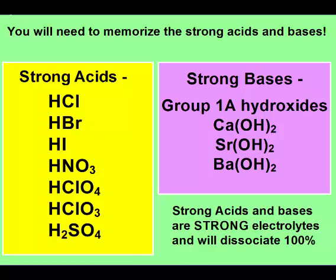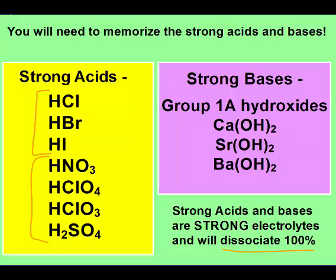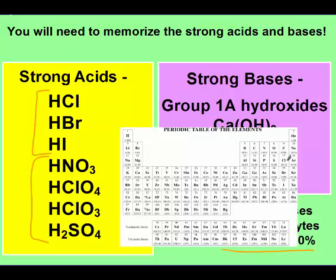You need to know your strong acids and strong bases because they dissociate 100% and are strong electrolytes. If they're an acid or base and not on this list, they will only break apart about 5%, so you need to memorize these lists. Your strong acids include three binary acids — HCl, HBr, and HI — and four with polyatomic ions: nitric acid, perchloric acid, and sulfuric acid. Notice on the periodic table, all the strong binary acids are listed right there together.